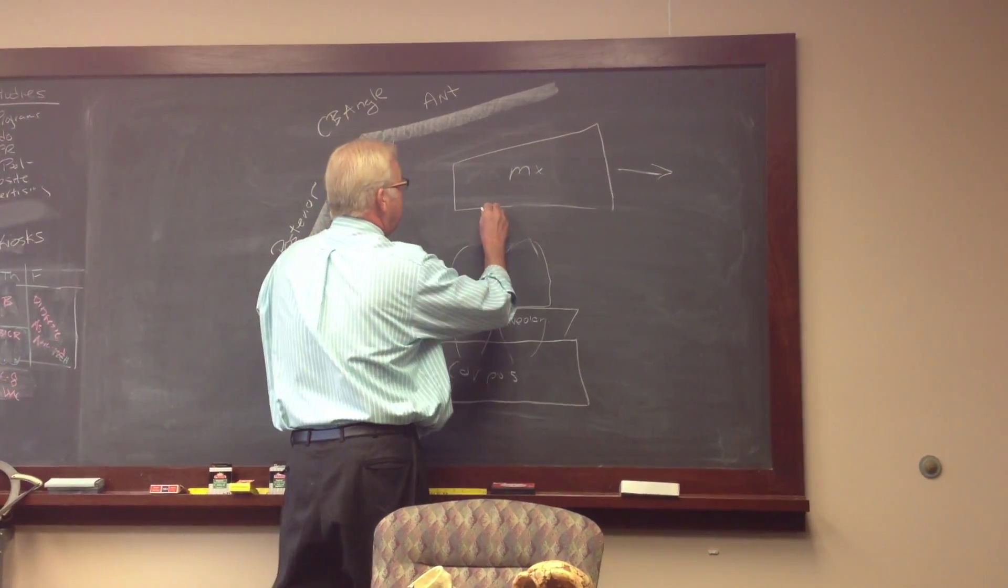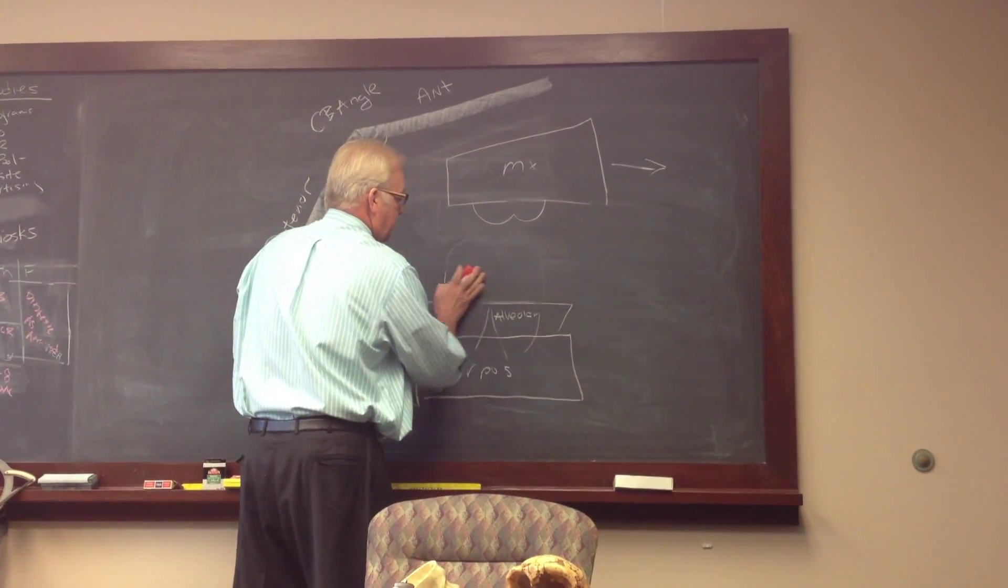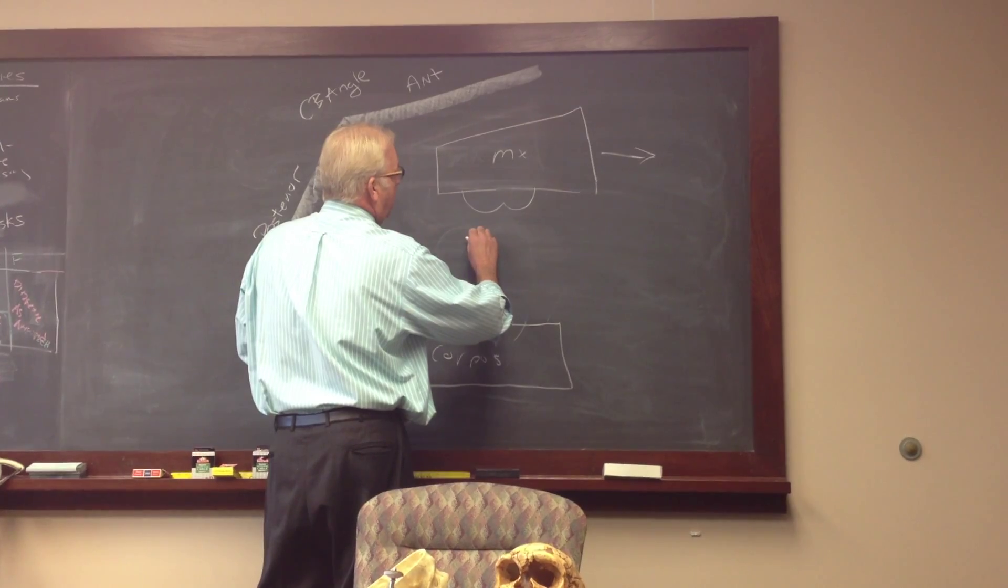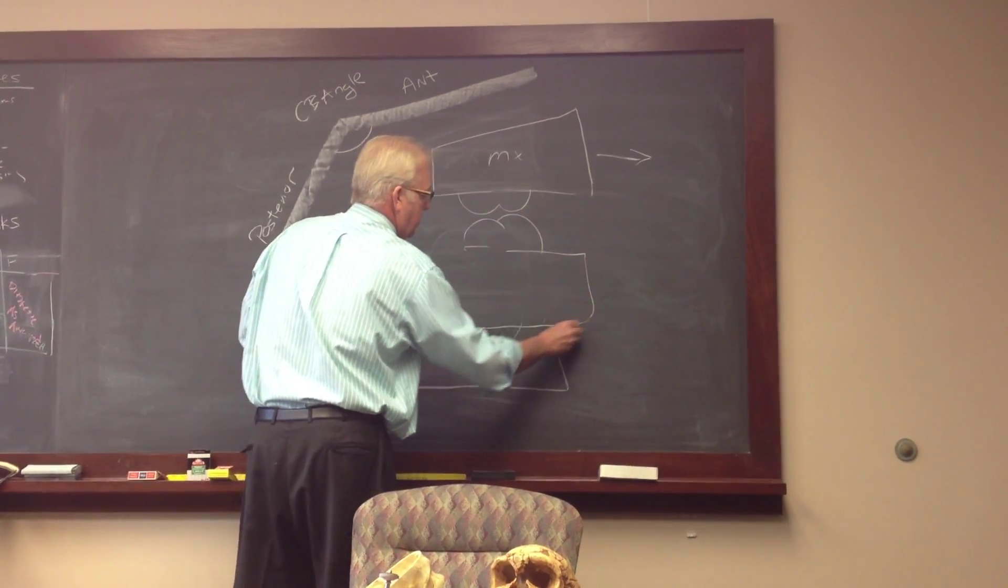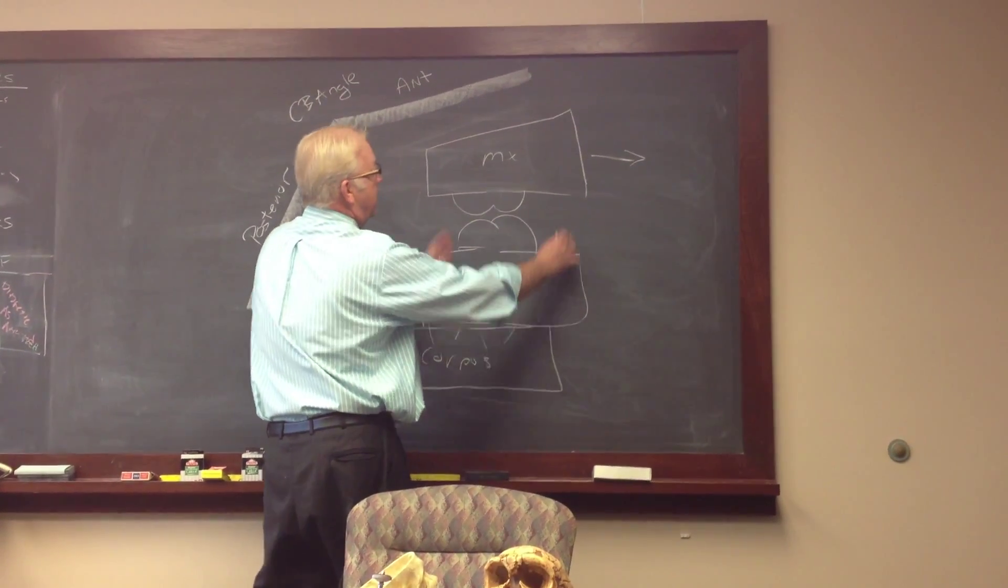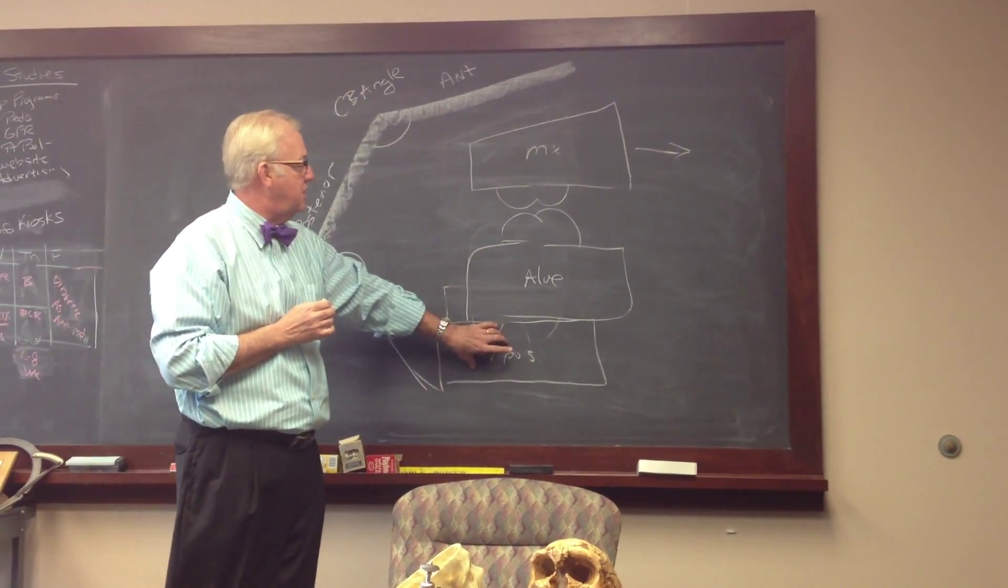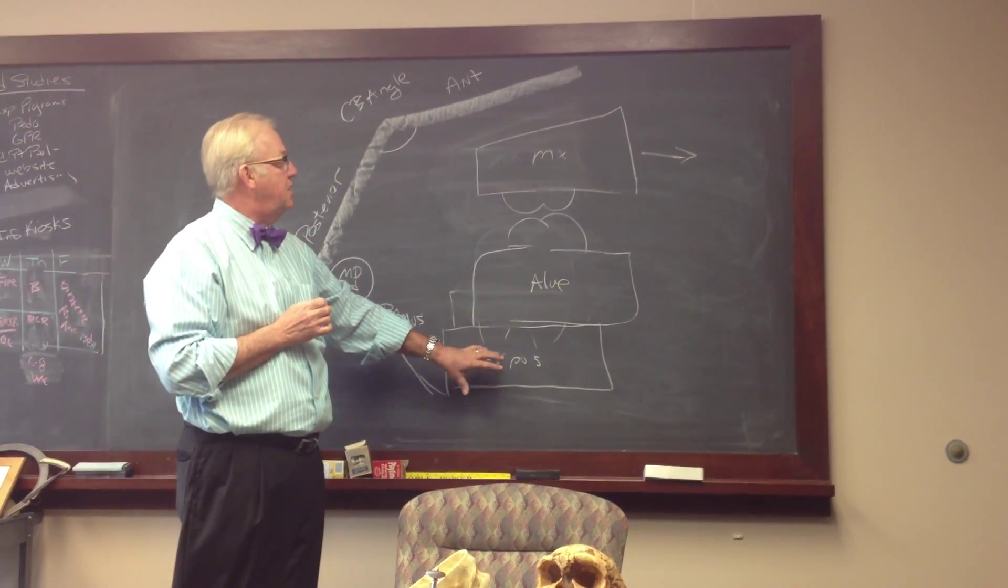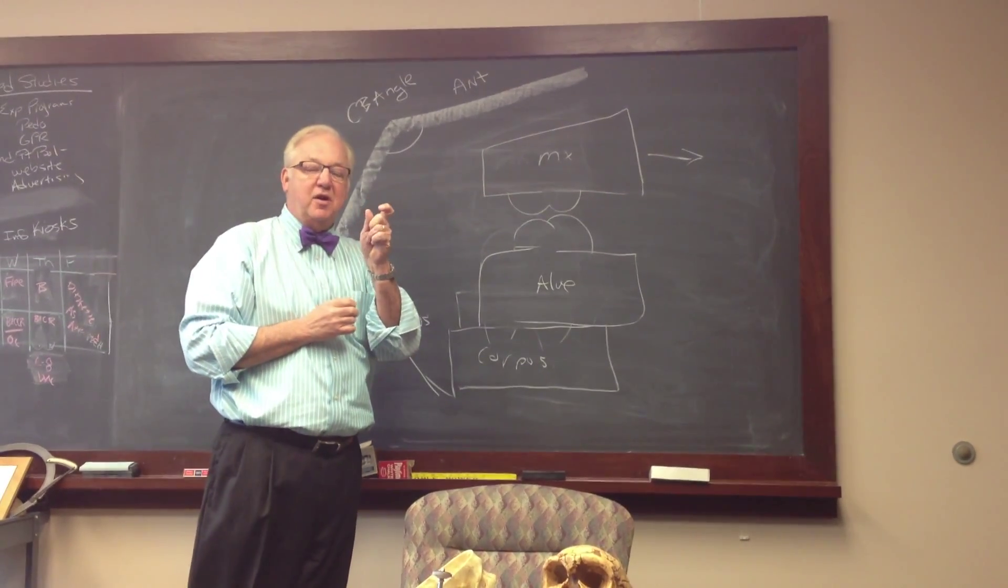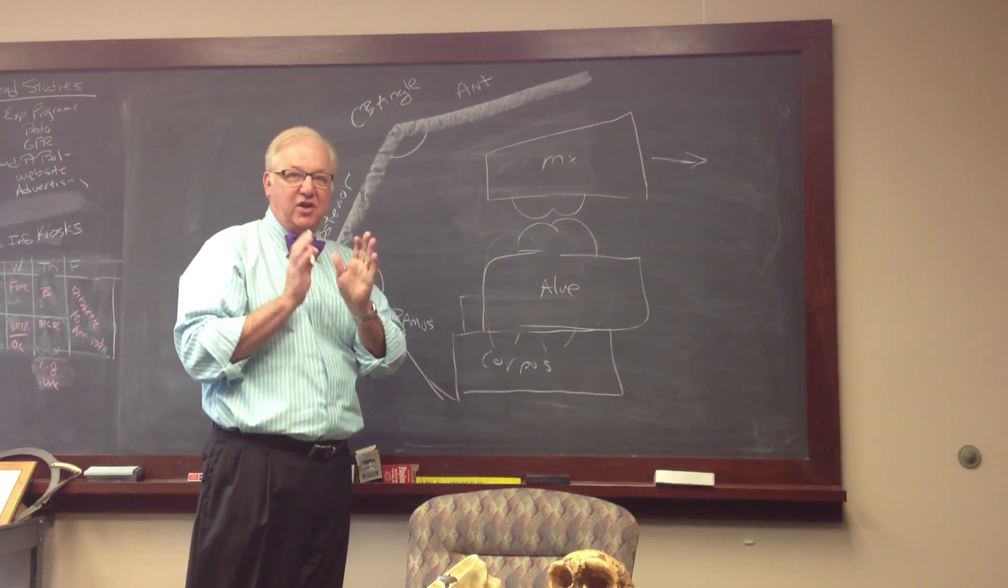We could put the maxillary molar in the same relationship but position the mandibular alveolus further forward so that you end up with the alveolus on the mandible being more forward to compensate for the maxilla being more forward. So all of these component parts are able to adjust to allow the molar occlusion to be within this 6mm range. And that is really the amazing thing about the human face and occlusion.